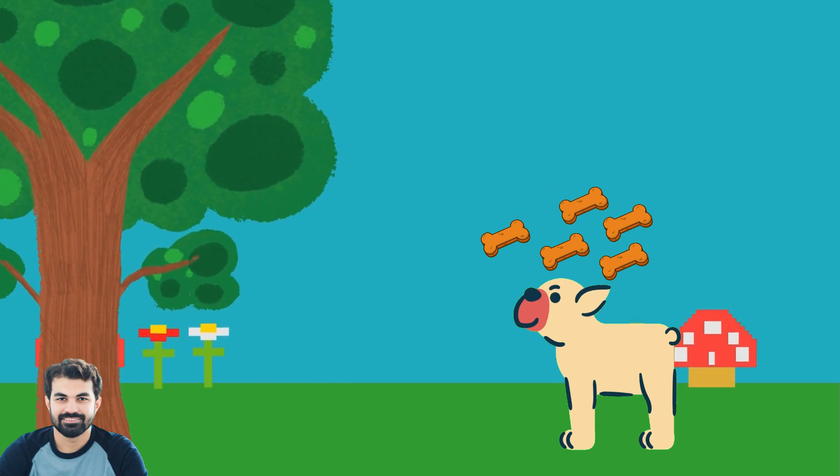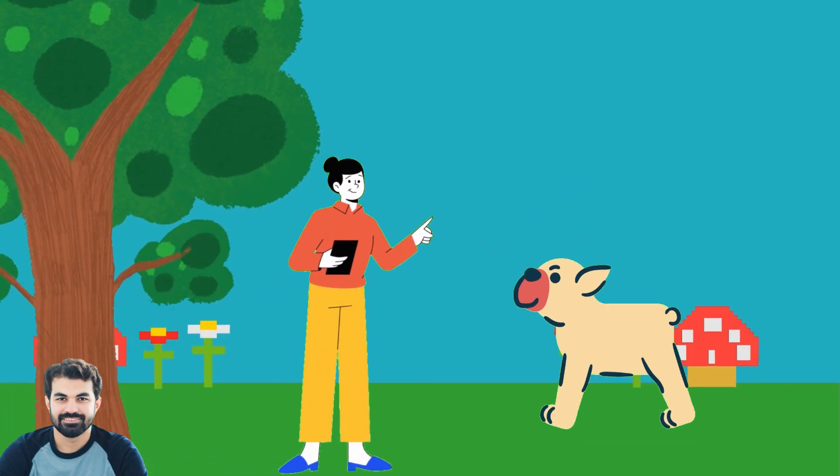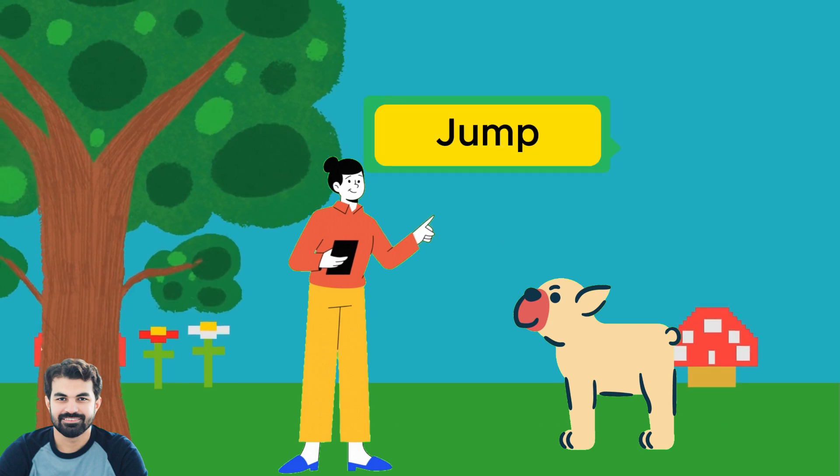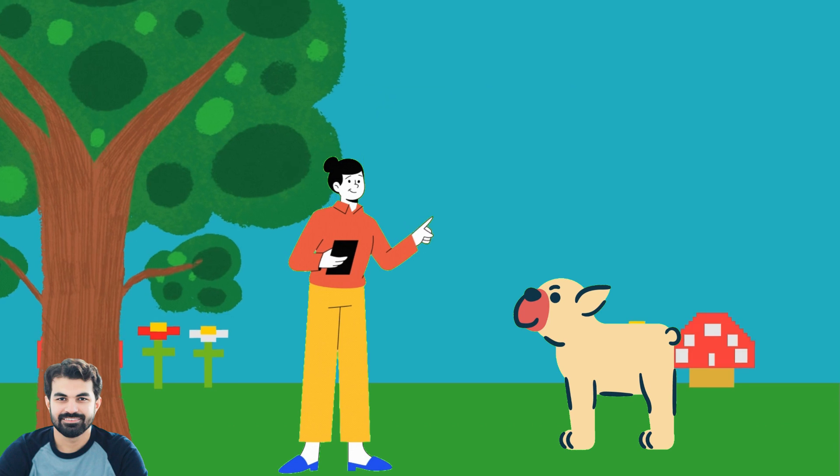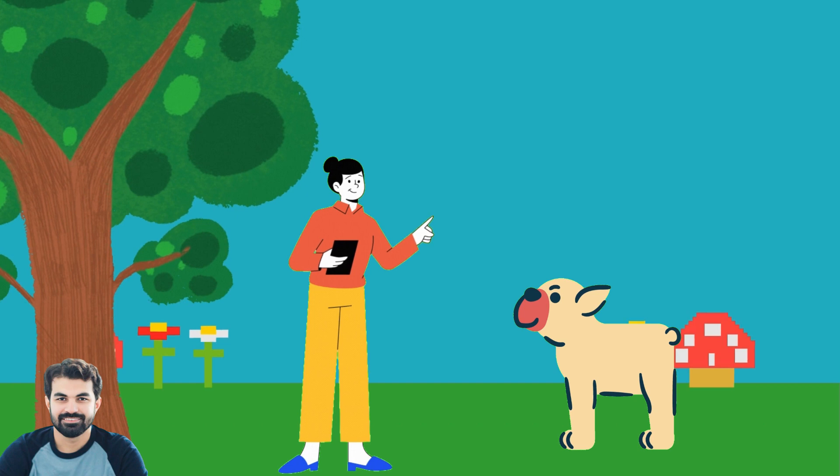Training a dog can be tricky, as anyone who's tried it knows. The dog might initially think 'whenever I jump I get a reward' instead of 'whenever my owner says jump and then I jump, I get a reward.' While this confusion is understandable, reinforcement learning agents, through systematic interaction and feedback, will eventually learn to understand the connection between commands and rewards.